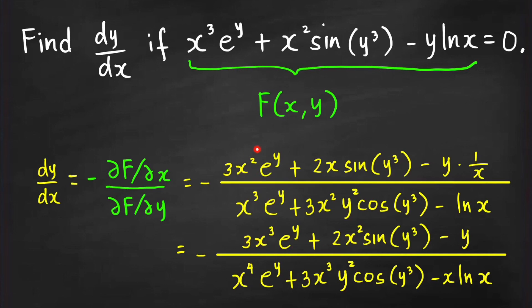We simplify the complex fraction by multiplying numerator and denominator by x. This gives us: the numerator becomes 3x³e^y + 2x²·sin(y³) − y, and the denominator becomes x⁴e^y + x³·cos(y³)·3y² + x·ln(x).